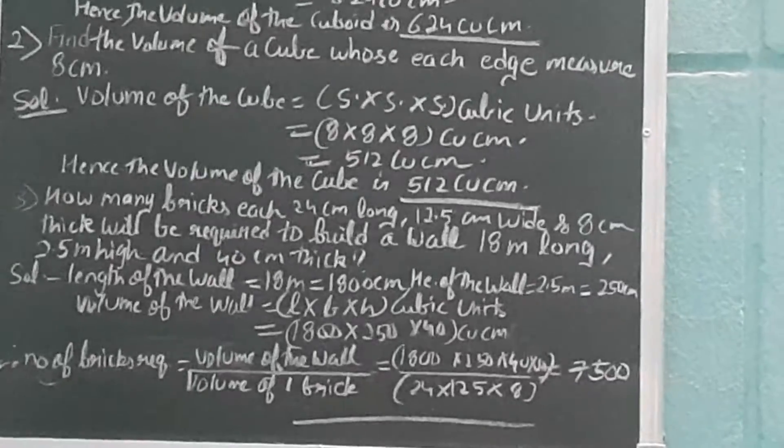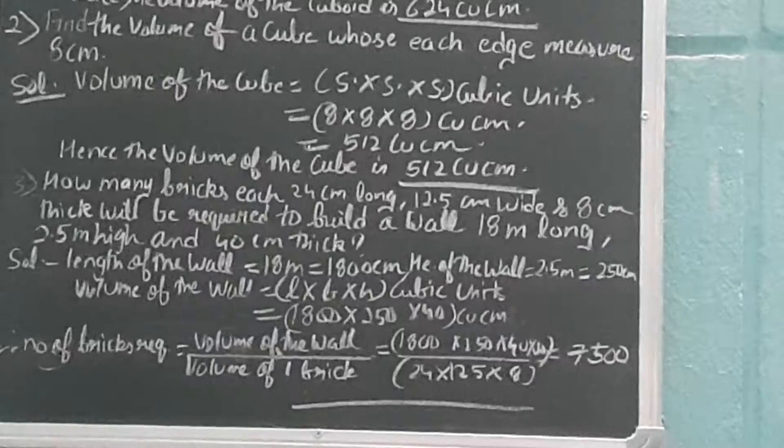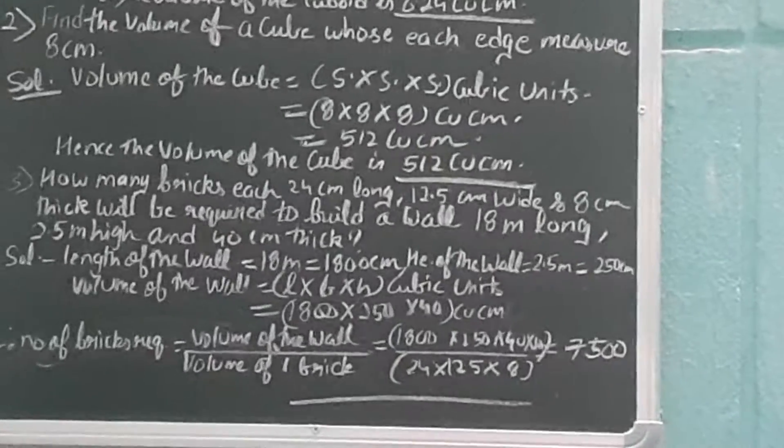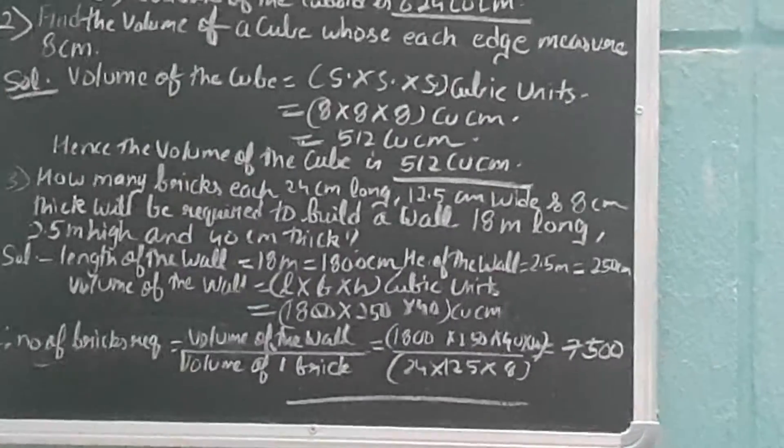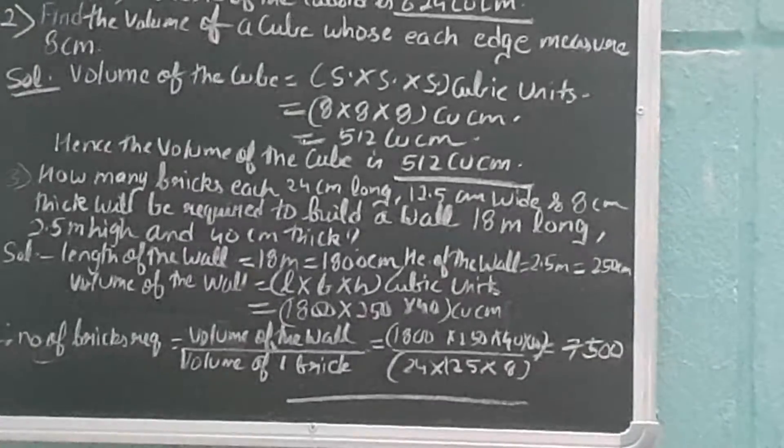So 1800 × 250 × 40 × 10 divided by 24 × 125 × 8, because it's very important to remove the decimal—when we remove the decimal it becomes easy for us to solve the question.